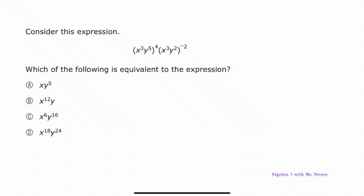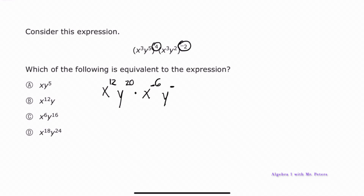They ask us to simplify an expression with exponents. First, we handle the power-to-a-power rule by multiplying exponents: x³ becomes x¹², and y⁵ becomes y²⁰. For the second expression with negative exponents, we multiply exponents to get x⁻⁶ and y⁻⁴. Then we add exponents: x¹² + x⁻⁶ = x⁶, and y²⁰ + y⁻⁴ = y¹⁶. The answer is answer choice C.